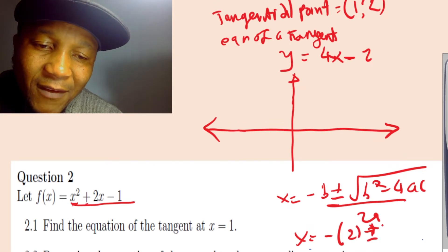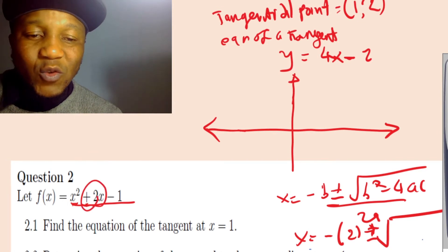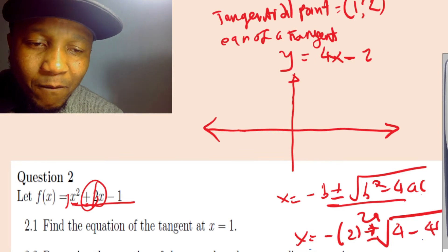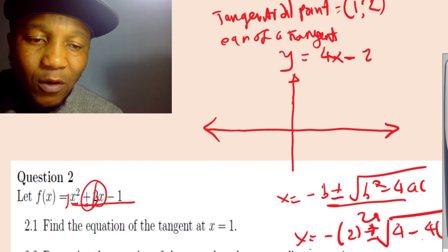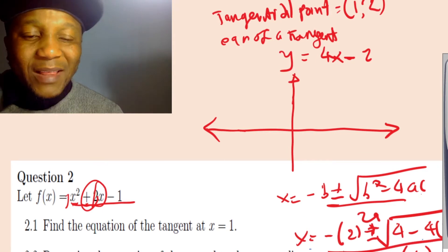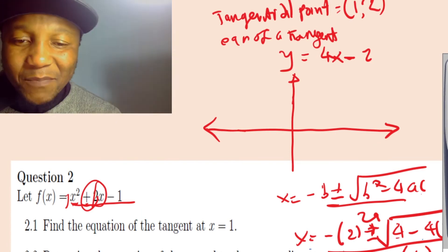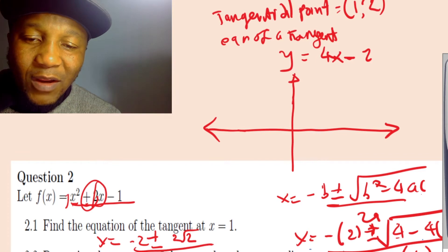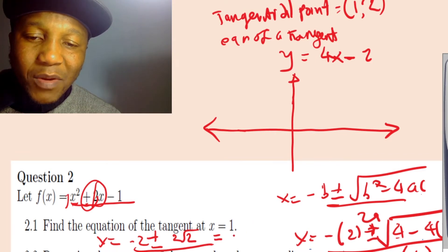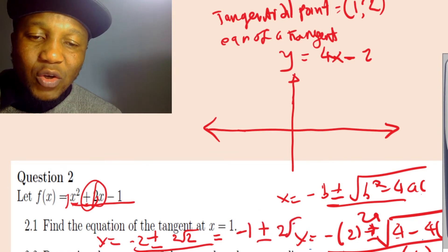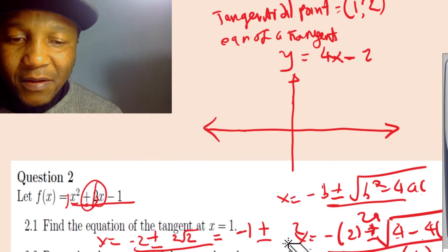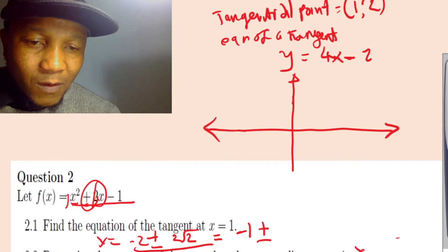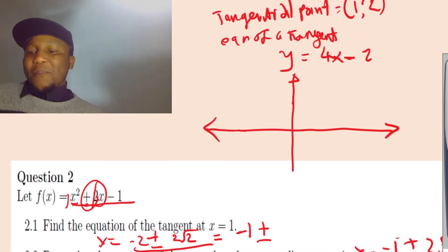Our equation is x² + 2x - 1, so a = 1, b = 2, c = -1. Substituting: x = (-2 ± √(4 - 4(1)(-1))) / 2(1) = (-2 ± √8) / 2. And √8 = 2√2, so x = (-2 ± 2√2) / 2, which simplifies to x = -1 ± √2.